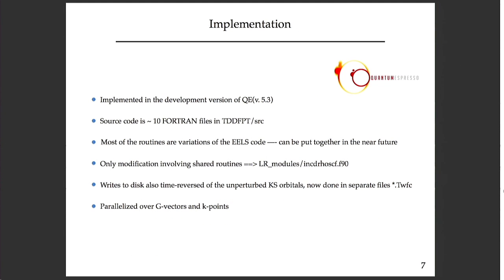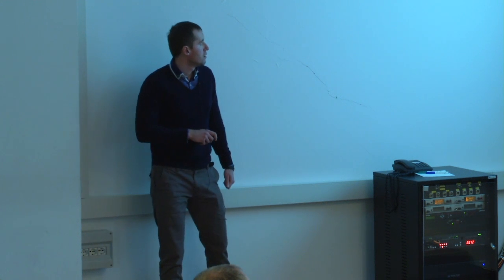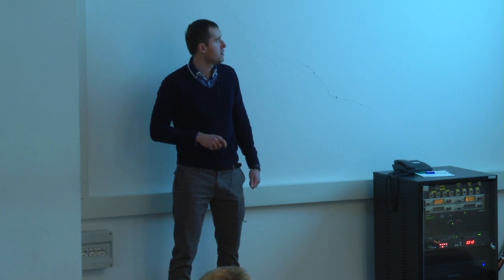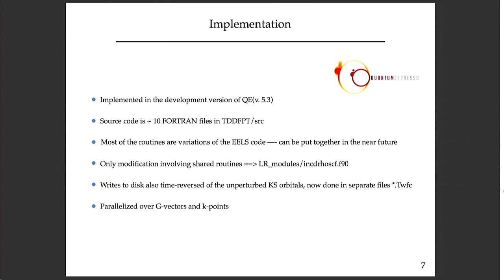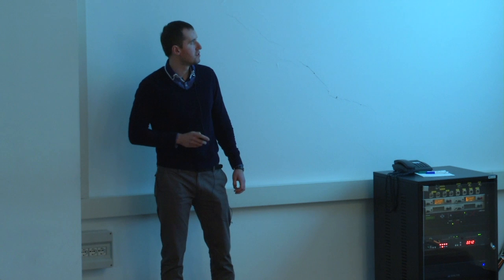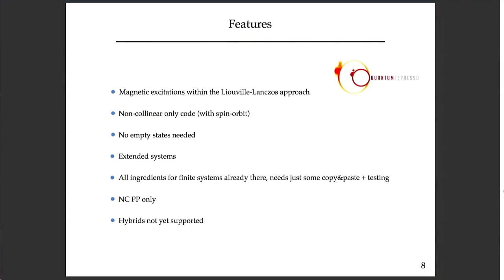I'm finishing almost. There are a couple of last slides. This code is implemented in the development version of Quantum Espresso 5.3. Tommaso is going to port it to the latest version. There are several new routines in the TDDFPT folder, like of the order of 10 Fortran codes. Then there are other routines that are modified. As Tommaso highlights, many routines are just small modifications, maybe some even big modifications of the EELS code. In LR modules, there is this common routine for the response density which is also modified a bit. In the current implementation, Tommaso writes the time-reversed Kohn-Sham orbitals to disk. Current implementation supports parallelization over G vectors and k points.